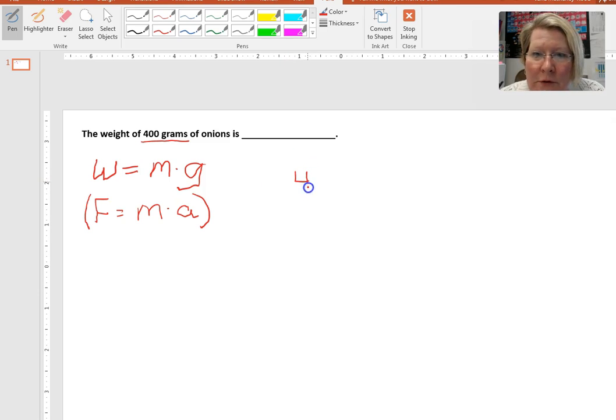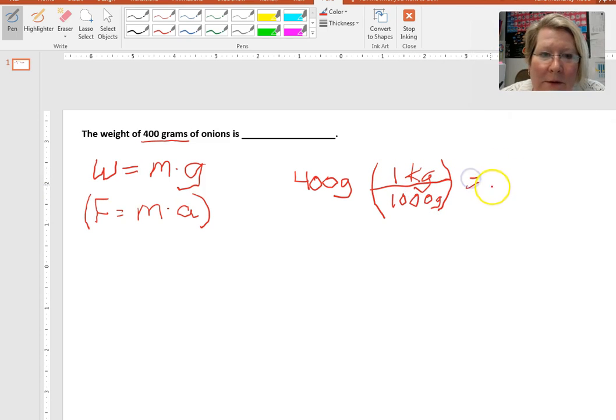So the first thing I want to do is convert 400 grams into kilograms. So there are a thousand grams per one kilogram. And so that comes out to be 0.4 kilograms.